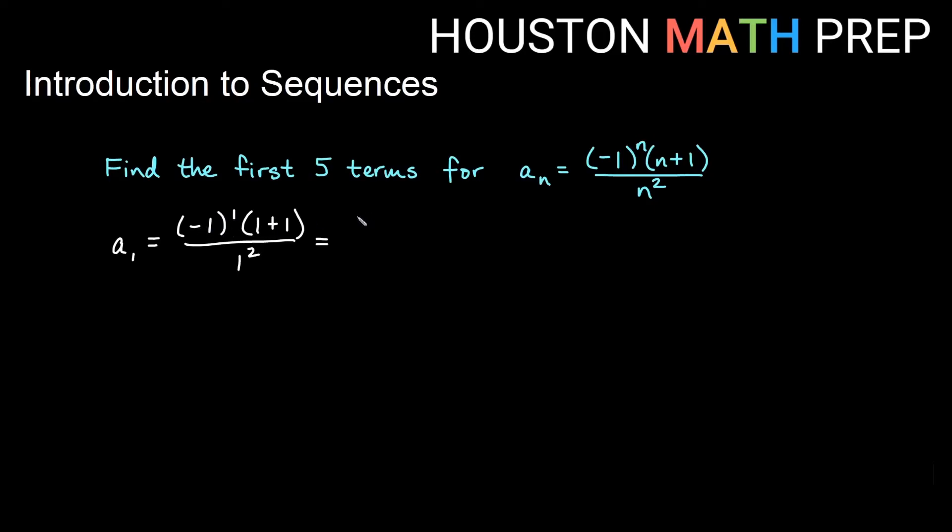So that will be negative 1 to the 1 times the quantity 1 plus 1 all over 1 squared. Here I have negative 1 to the 1 would just be negative 1, 1 plus 1 is 2, and then on the bottom 1 squared would just be 1. So we have negative 1 times 2, which is negative 2 divided by 1, which would be negative 2 for our first term.